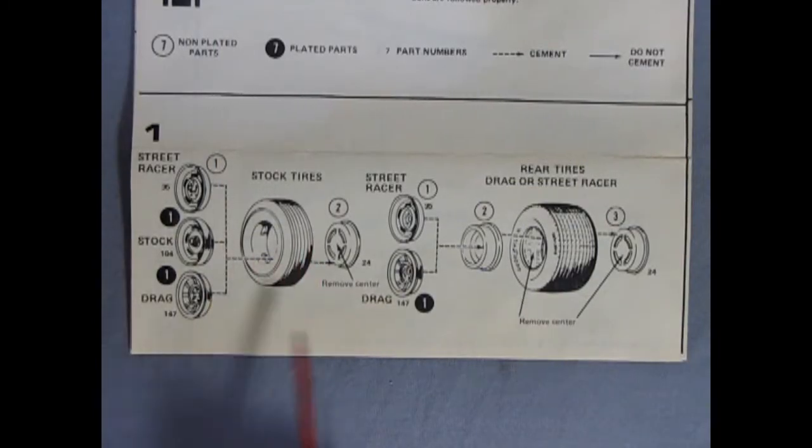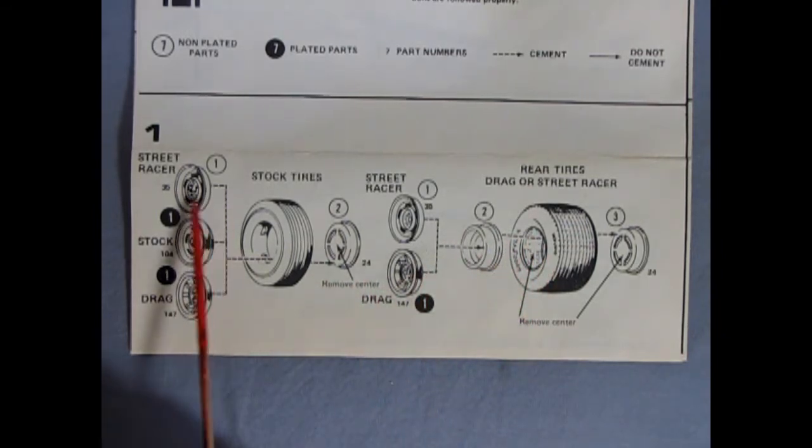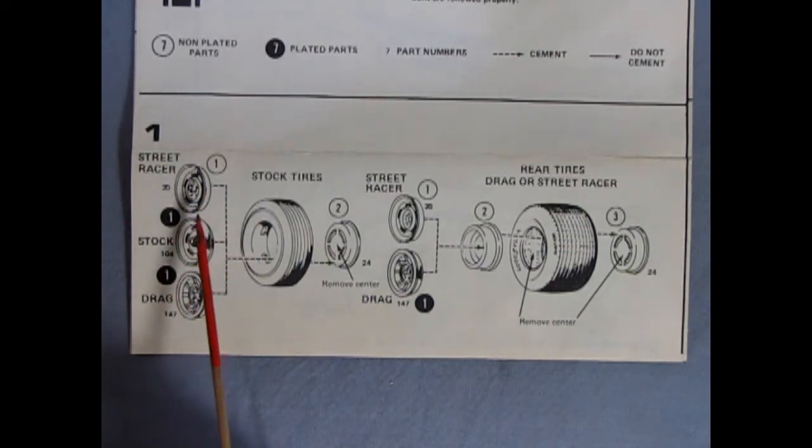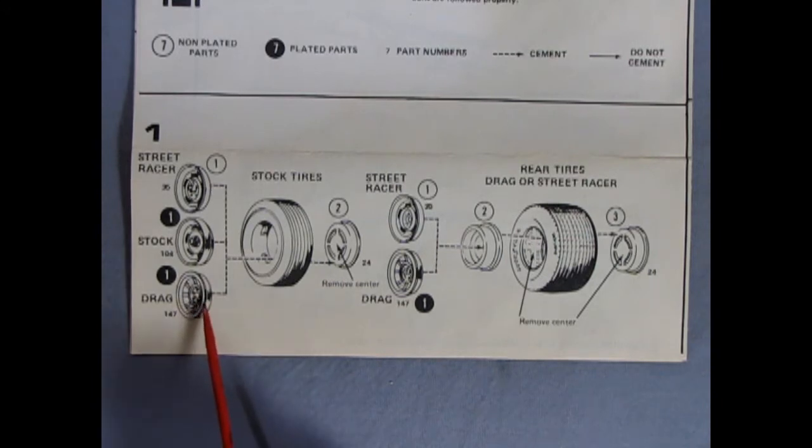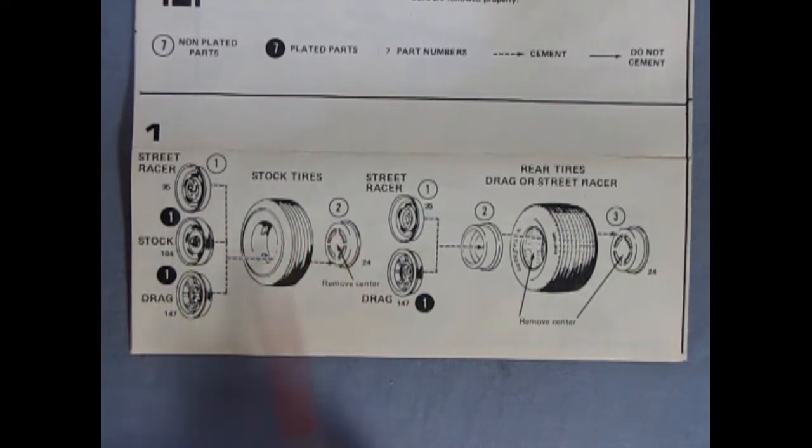Panel one shows our wheels going together with our stock tires as well as the rear tires. And here we have the stock or the street racer wheels which are the stock wheels without the caps in the center, then our stock wheels with the caps in the center, and then our drag racing wheels which are those vector style, and they'll all go into these stock tires.